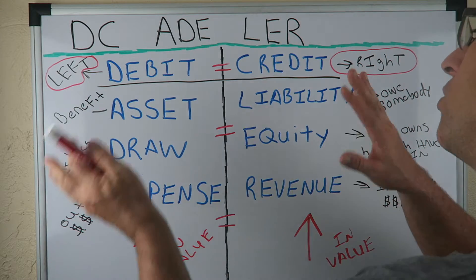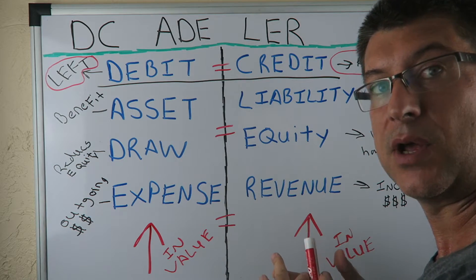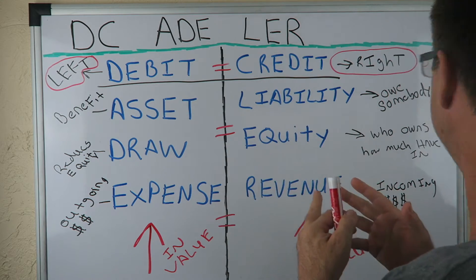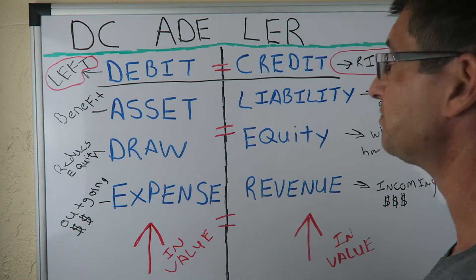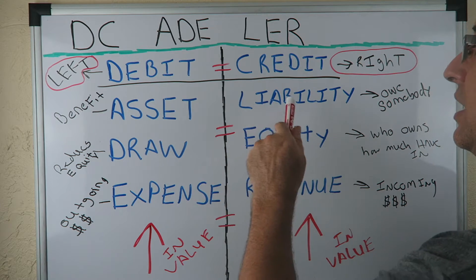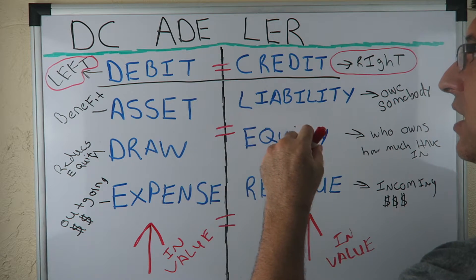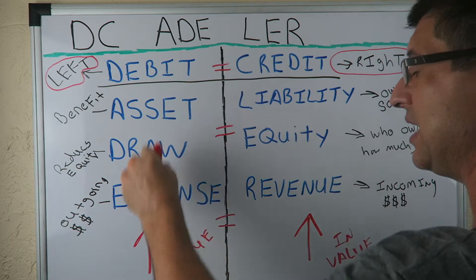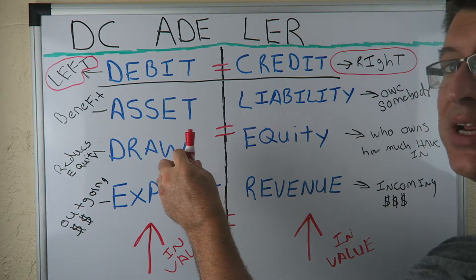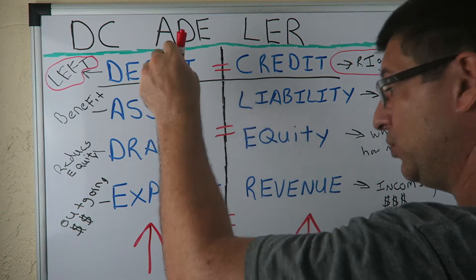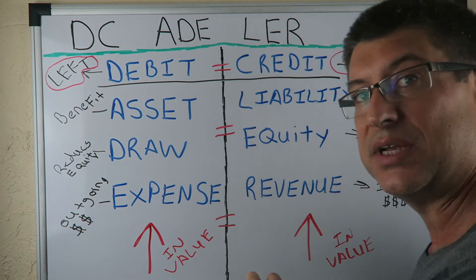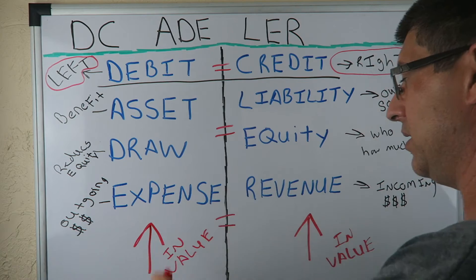Now we go over to the other side — the credit side in normal balance. We have a liability decreasing in value: we debit it. Equity decreasing in value: we debit it. Revenue decreasing in value: we debit it.